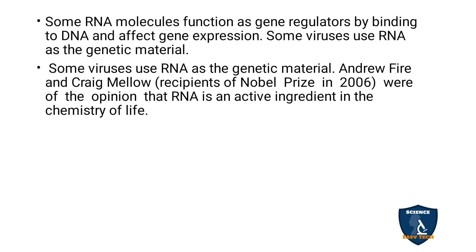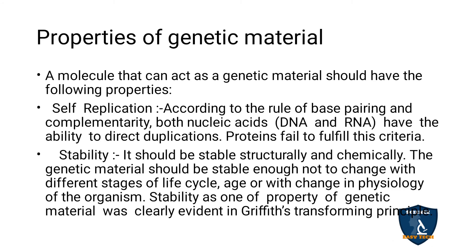You have studied the types of RNA — rRNA (ribosomal RNA), tRNA (transfer RNA), and mRNA (messenger RNA) — in detail in the 11th standard class. Now we move on to the properties of genetic material. A genetic material should have the following properties. First: self-replicating. Both DNA and RNA are self-replicating — they have the capacity to replicate or duplicate. Proteins fail to fulfill this criterion; only DNA and RNA can replicate, but proteins cannot replicate on their own as they are synthesized by RNA.